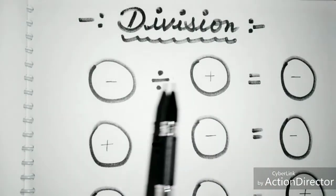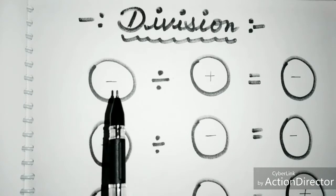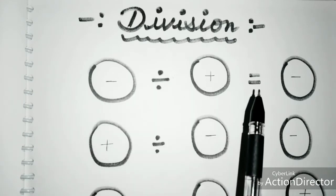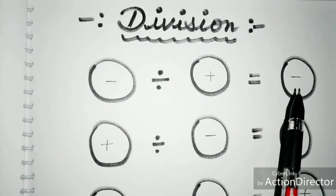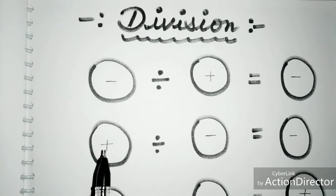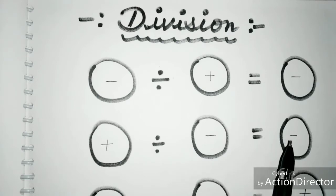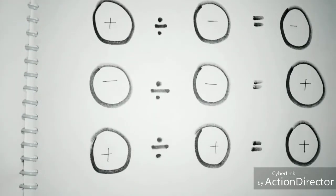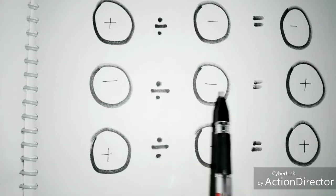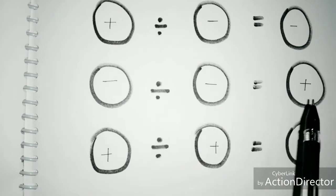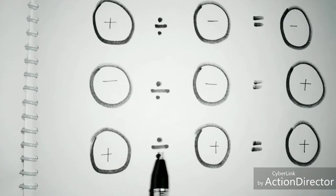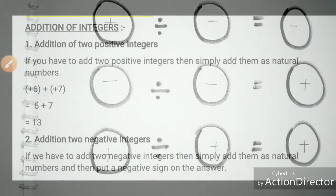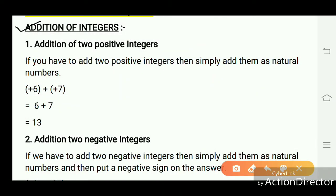Division in integers: when we divide a negative number by a positive number, it gives a negative result. A negative number divided by a negative number gives a positive result. When we divide a positive number by a positive number, it gives a positive result.